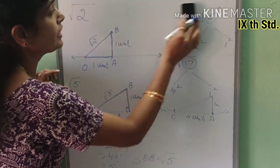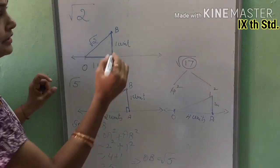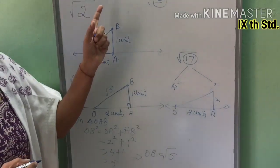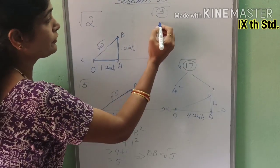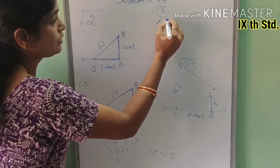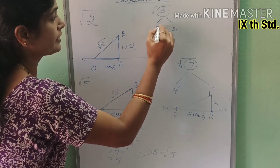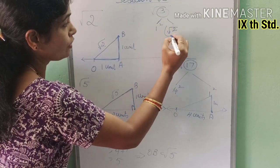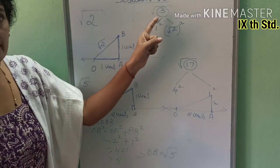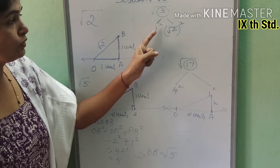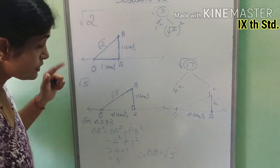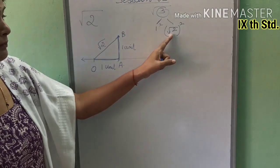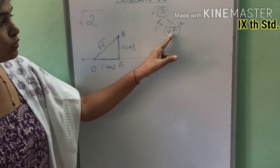Now, you may wonder how to represent root 3, since 3 cannot be split as the sum of two perfect square numbers directly. But we can write 3 = 1² + (√2)², because the square of root 2 gives 2, and 1 + 2 = 3. So to represent root 3, we first need to represent root 2 on the number line.